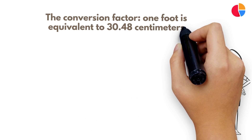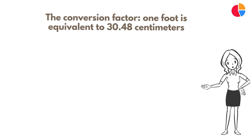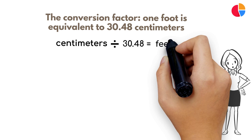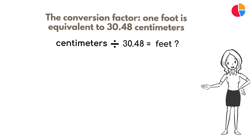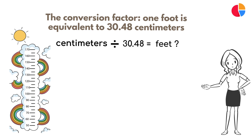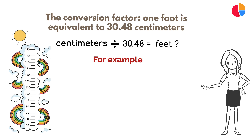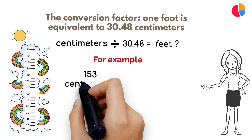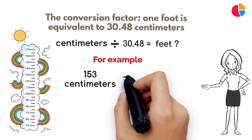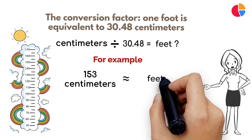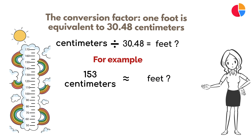One foot is equivalent to 30.48 centimeters. To convert from centimeters to feet, you simply divide the number of centimeters by this conversion factor. Now let's dive into an example — suppose we want to convert a length of 153 centimeters to feet.